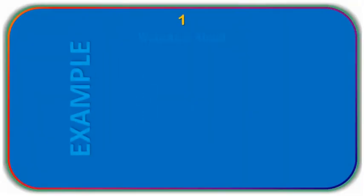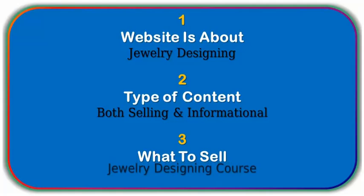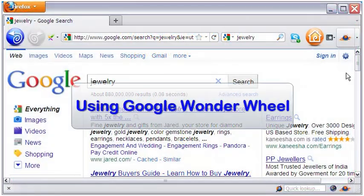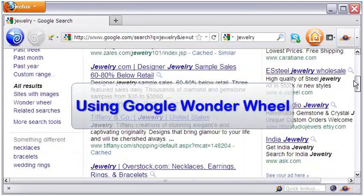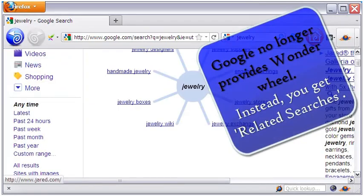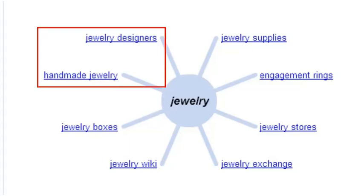Now that we are ready, let's say you want your content to be on teaching jewelry designing and you want to sell a jewelry designing course on your website — both informational, a blog maybe, and selling a training course. In the first step, we start our search for just the word jewelry and then proceed for finer search. We begin with Google's Wonder Wheel, which is almost the same as related searches but shown pictorially and easy to understand. Here we see eight terms related to jewelry. Since my target is to start a teaching course on jewelry designing, I select two terms from the eight: handmade jewelry and jewelry designers.